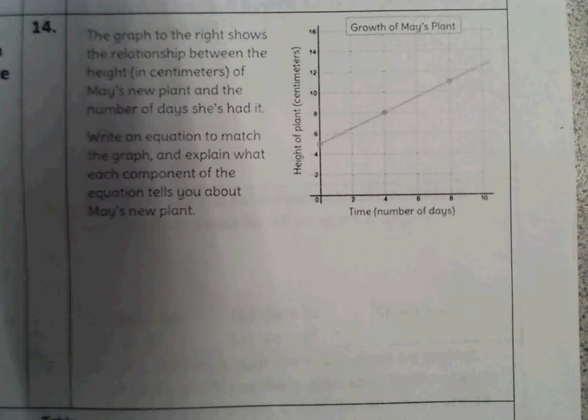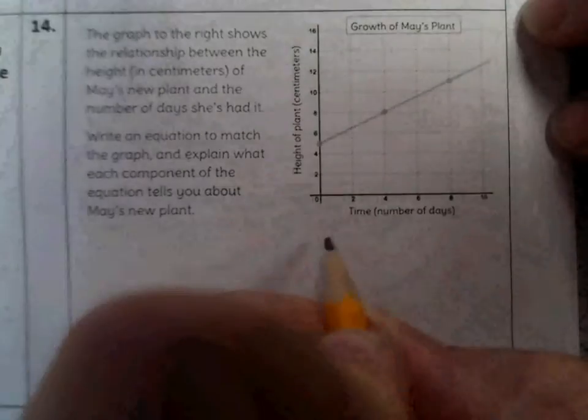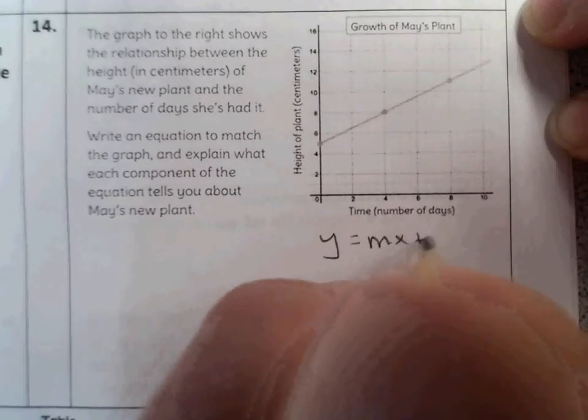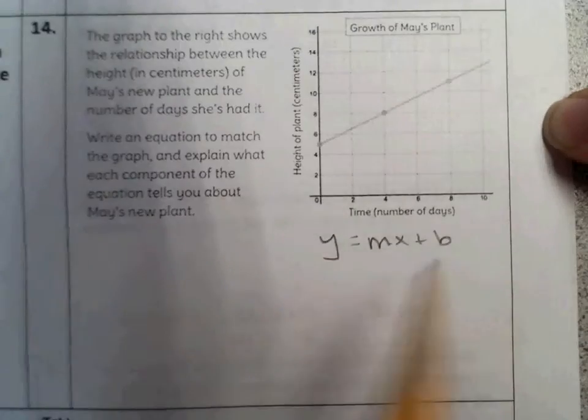Alright, so this is a line. Straight, we know it's linear. We can tell just by looking that this is a linear equation. Which means my form should be y equals mx plus b. m is the slope, b is the y-intercept.